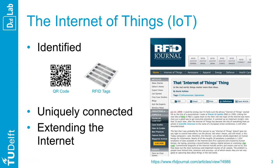Second, a thing refers to any physical object attached to a unique device that can connect as well as send and receive data through the Internet. Finally, the IoT extends the Internet — a global end-to-end communication infrastructure.